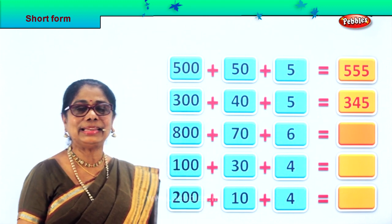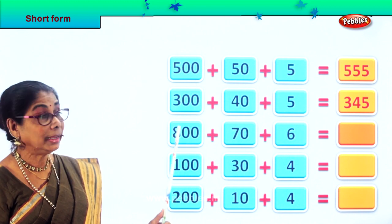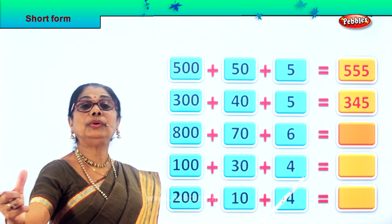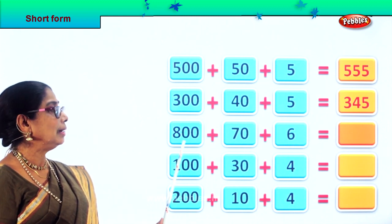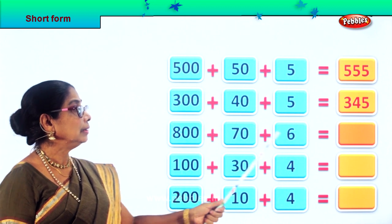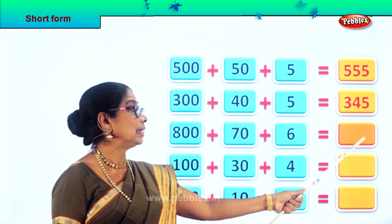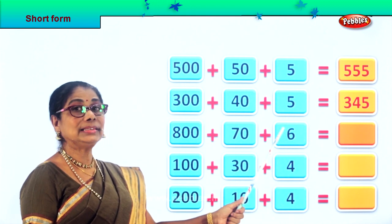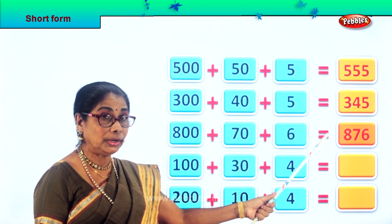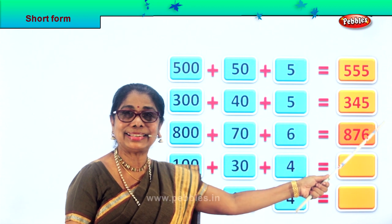Interesting, isn't it? Let's take the next number. What is 800 plus 70 plus 6 equal to? Do the short form. So 800 gives us 8 in the hundreds place, 70 gives us 7 in the tens place, 6 in the ones place. 800 plus 70 plus 6 equal to 876. Lovely, isn't it?